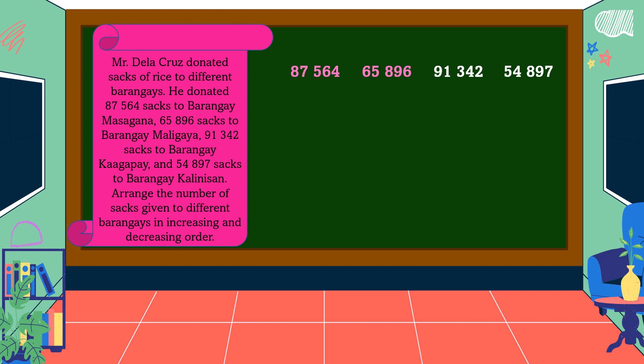How about the third number? Very good, there are five digits. And lastly, how many digits are there in 54,897? Yes, there are also five digits. In our example, all the numbers have the same number of digits, so we don't know yet what is the smallest or the largest. So let's start comparing from the highest place value, which is the ten-thousandths place. We have 8, 6, 9, and 5.